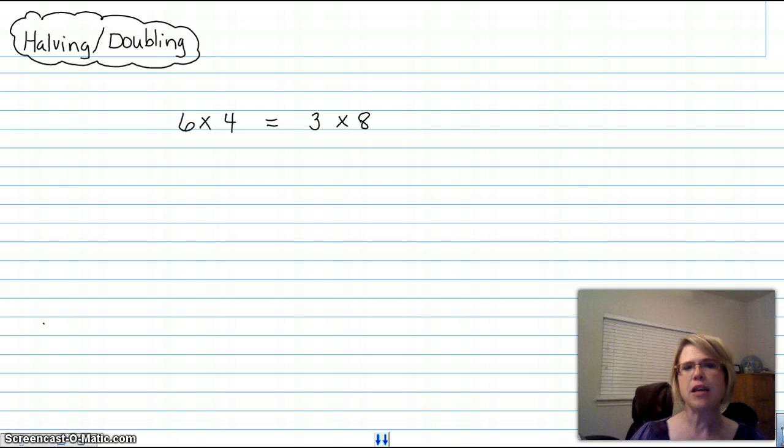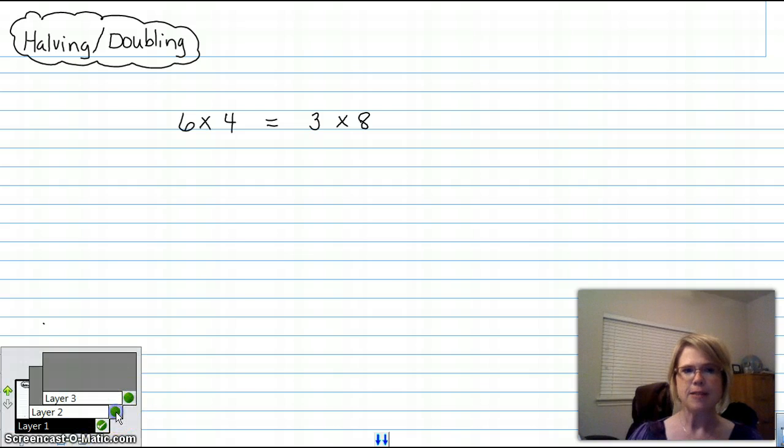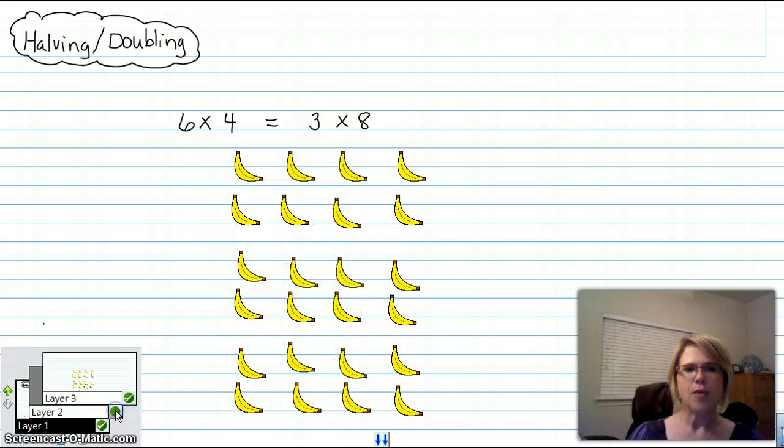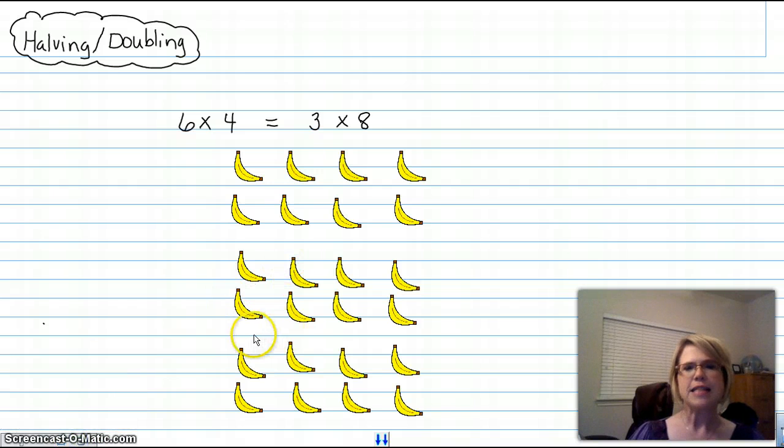So we're first going to talk about halving and doubling. My question to you is, do you agree that the factor pairs 6 times 4 equals the same amount as 3 times 8? Hopefully you say yes, but if not, I want you to think about this. If I have these bananas, and let's say that I asked you how many bananas there were there.